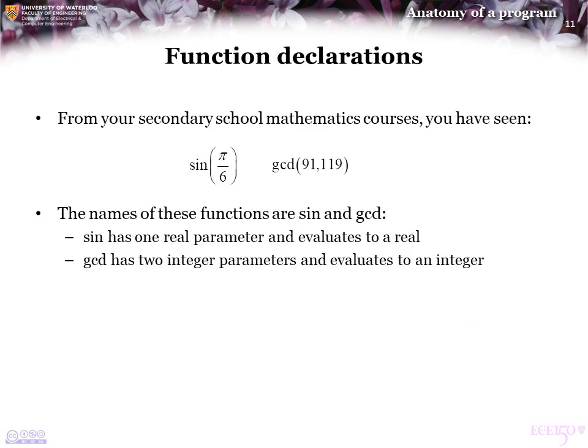From secondary school, you have seen various functions such as sine and GCD. The names of these functions are sine and GCD, or greatest common divisor. In the case of sine, it has one real parameter and the result is going to be a real value — assuming the parameter is in radians, though you could also define sine in terms of degrees. GCD has two integers as parameters and evaluates to an integer.